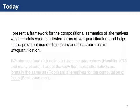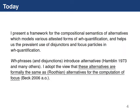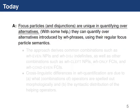Today I'll present a framework for the compositional semantics of alternatives, which models various attested forms of WH quantification, and also helps explain the prevalent use of disjunctors and focus particles in WH quantification. I'll be building on the basic intuition that WH phrases and disjunctors introduce alternatives in the grammar. In particular, I'll be developing the view that those alternatives introduced by WH phrases and disjunctors are formally the same objects in the grammar as Rooth's alternatives for the computation of focus. My answer to the driving question is that these items are unique in the grammar in being able to quantify over alternatives.